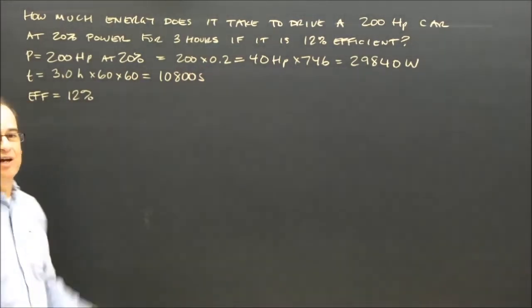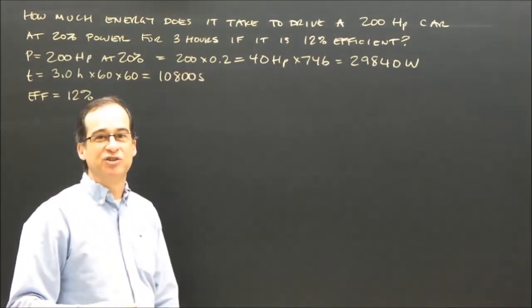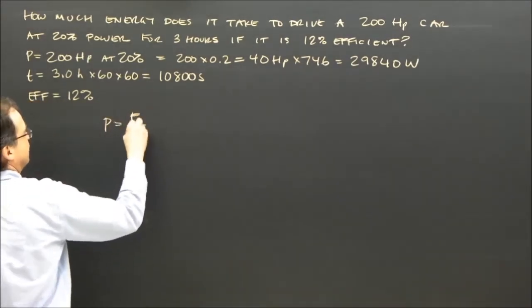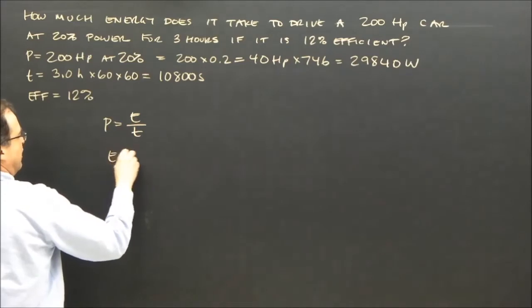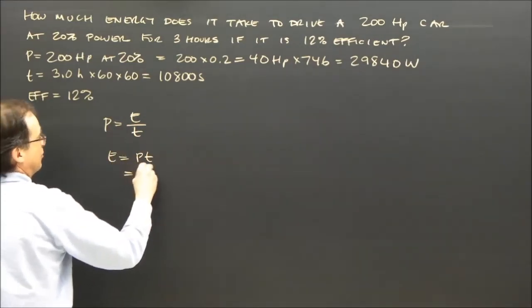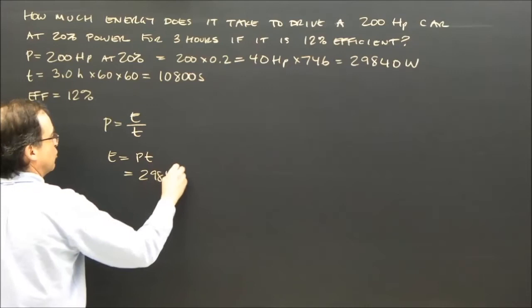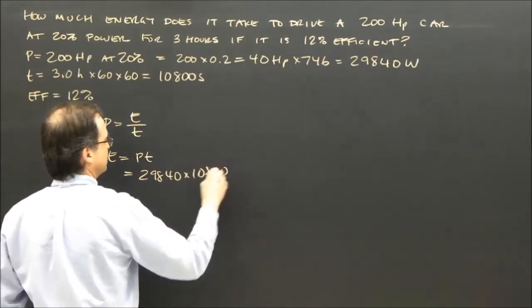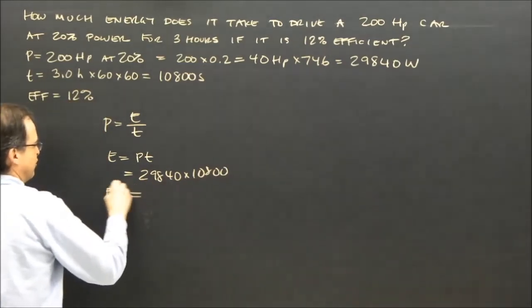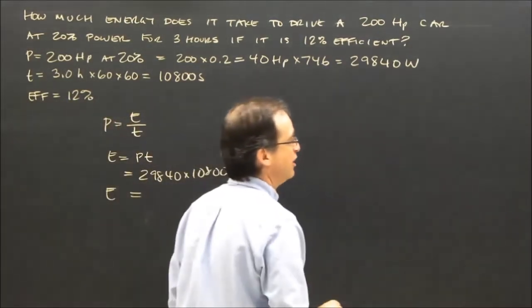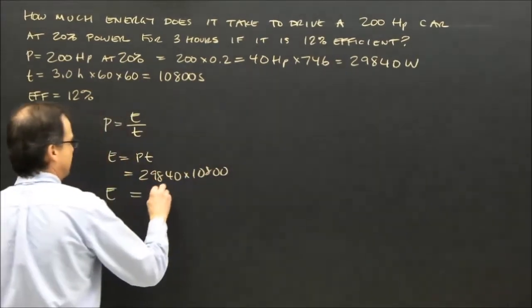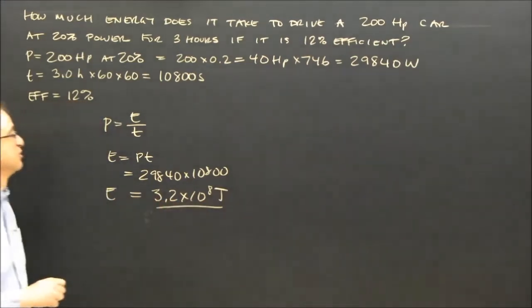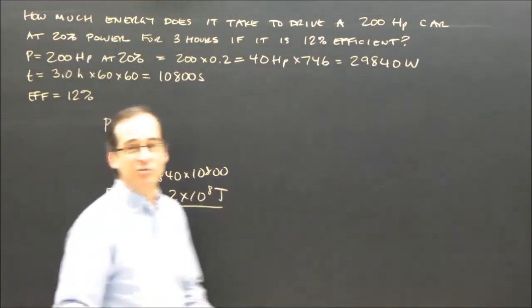So I know the power, I know the time. So I can figure out the energy associated with that because the formula for power is energy divided by time. So I rearranged energy as power times time. My power is 29,840 watts times 10,800 seconds. So the energy that this car used was 3.2 times 10 to the 8 joules. That is what the car used up.